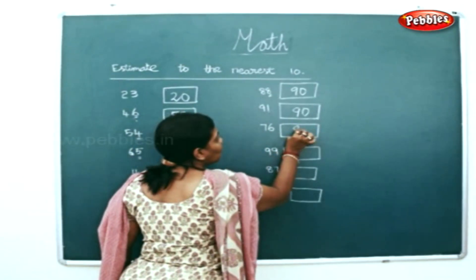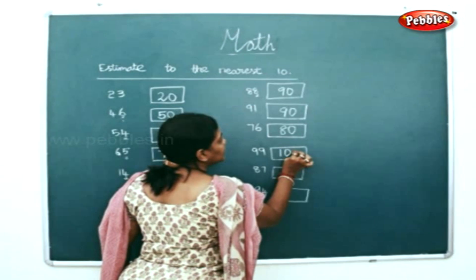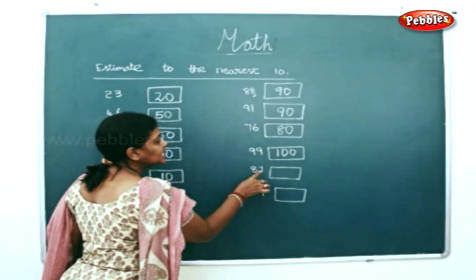76, so 80. 99 - 100 will be the closest 10. 87.